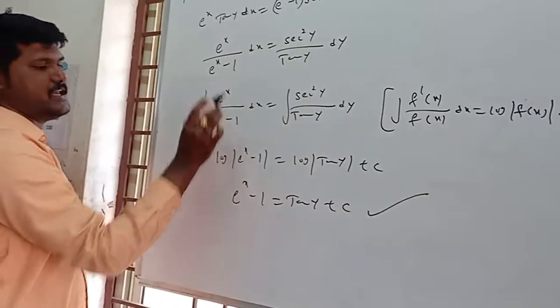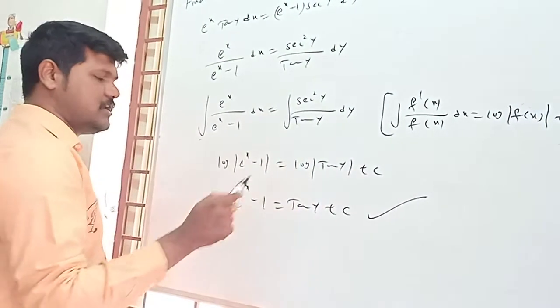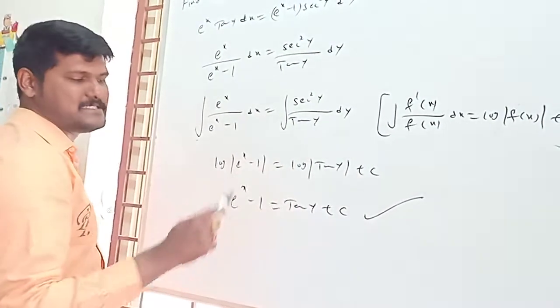So, denominator is then numerator. Log mod (e^x minus 1). Denominator is then numerator. Log mod tan y. So, both sides log: e^x minus 1 is equal to tan y plus c.